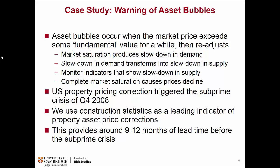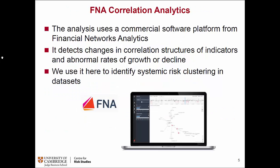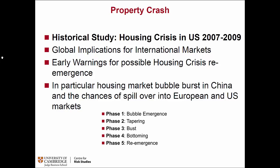The case study I'll focus on is the asset bubble in properties, particularly the US asset bubble in 2008. We will pick some indicators in building construction and see how this provides a warning about three to four quarters ahead of the actual events. I'll be using FNA, and we will go through different phases of the housing crisis: bubble emergence, tapering, bust, bottoming, and then possibly re-emergence currently.